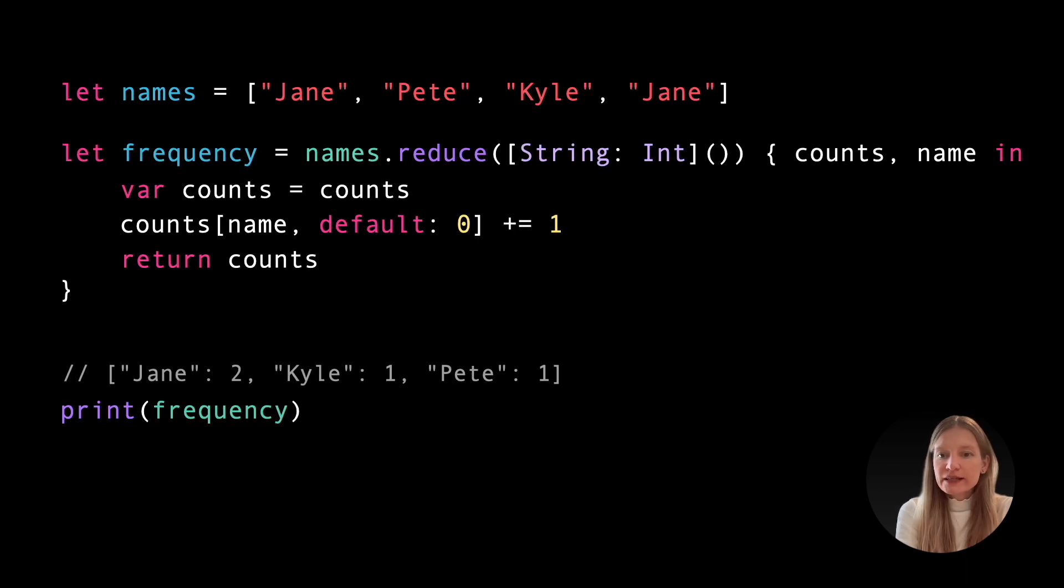The last technique we'll explore focuses on accumulating collection elements into a single value using the reduce method. For example, we might want to build a dictionary that stores the frequency of each name in a list. One way to do this is by using the version of reduce that takes an initial value and a closure that returns a new result at each step. This works, but it creates a new dictionary on every iteration, which can be expensive for large collections.